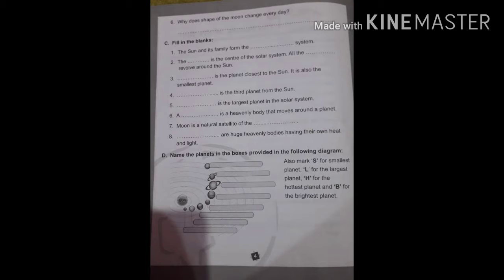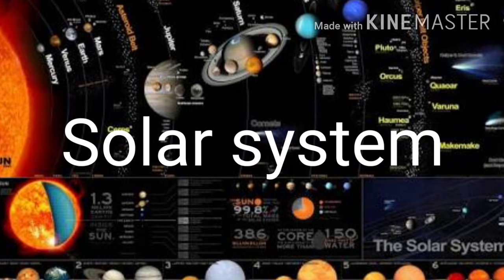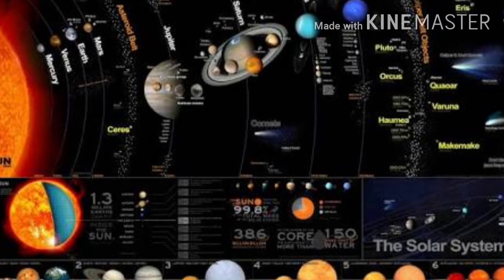First one is: the Sun and its family form the blank system. Can you tell me what will be here? Yes, it will be solar system. The Sun and its family form the solar system.